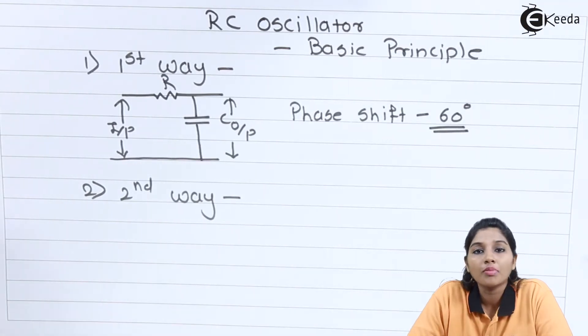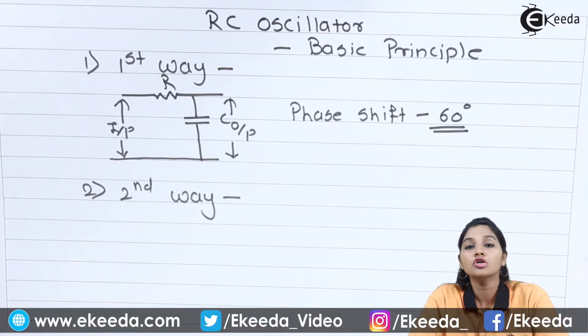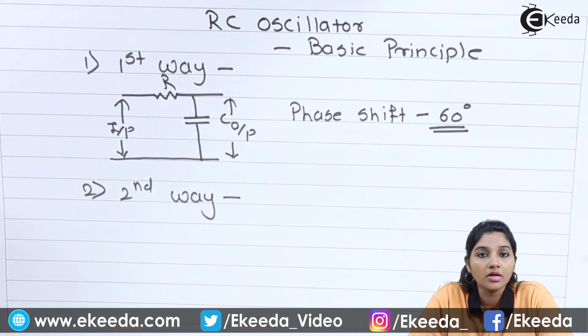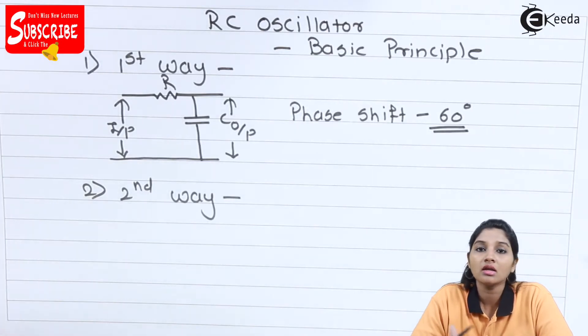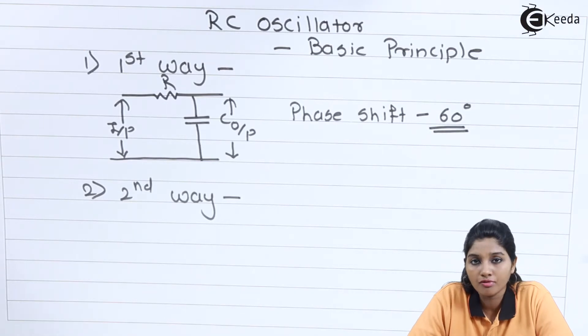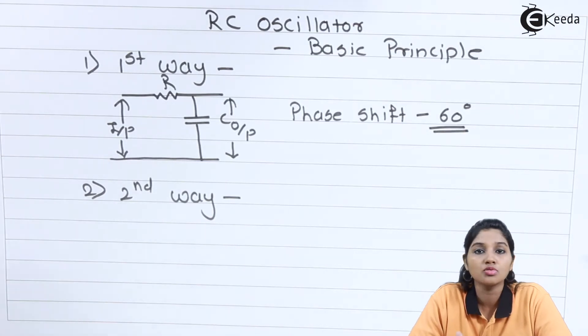Then second way to obtain the 360 degree phase shift is using two stage amplifier circuit. The first stage of amplifier provides a phase shift of 180 degrees, the output of first stage is applied to the input of the second stage, and then the output of second is again given back to the input of first stage without any feedback circuit. Then the total phase shift provided by both the amplifier circuit becomes 180 plus 180 which is 360 degrees.